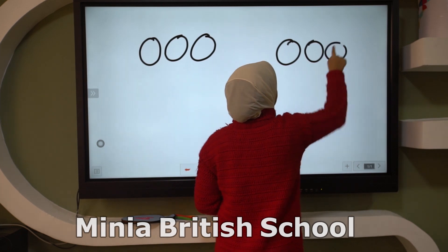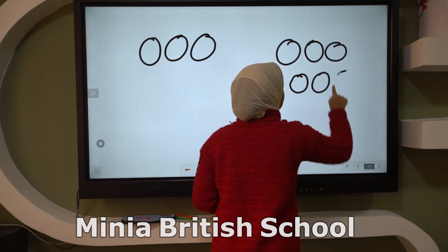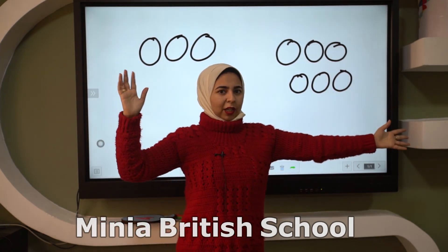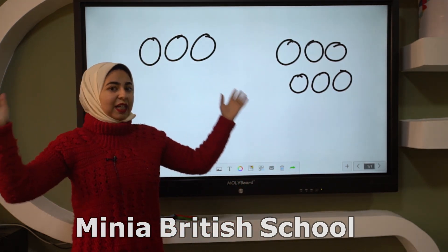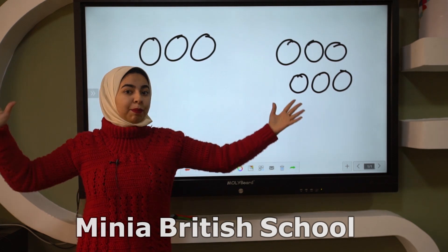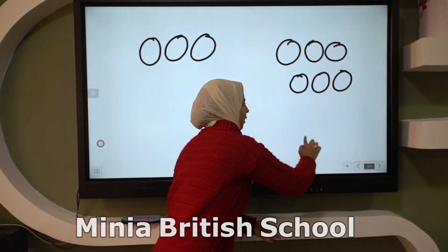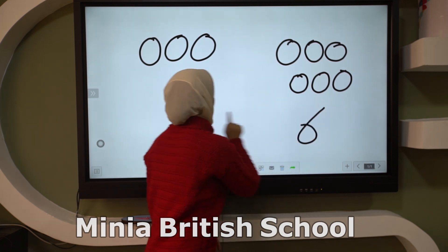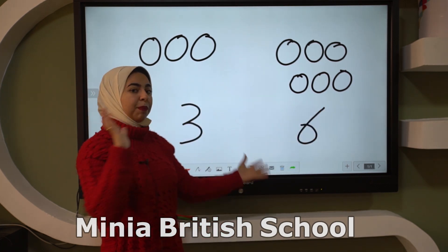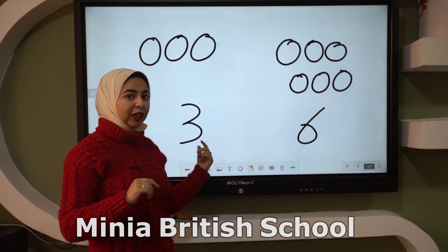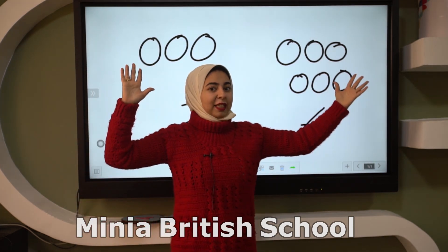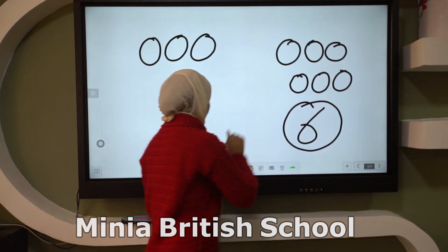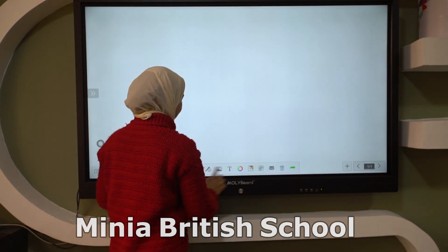Let's see another example. When I have three circles here and six circles here, which one is bigger — six or three? Excellent! Six is bigger than three.